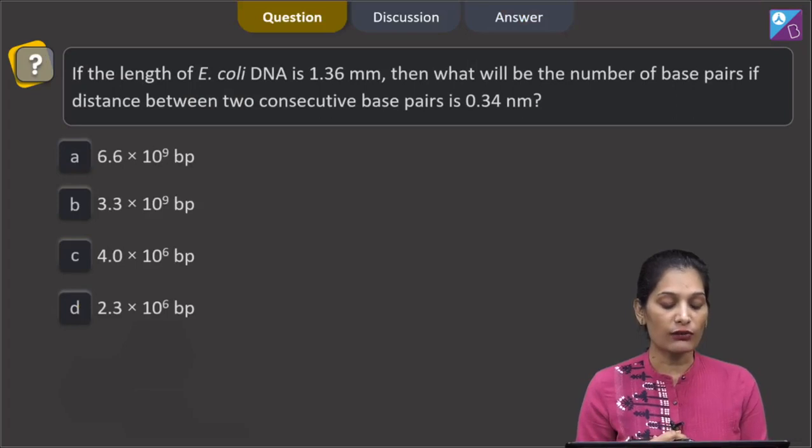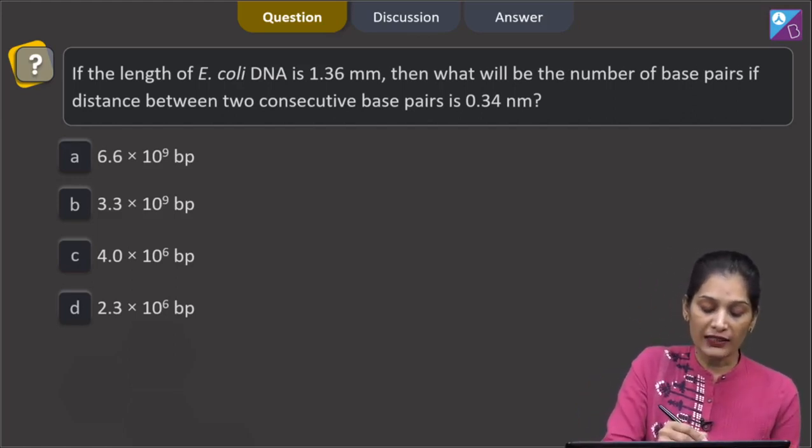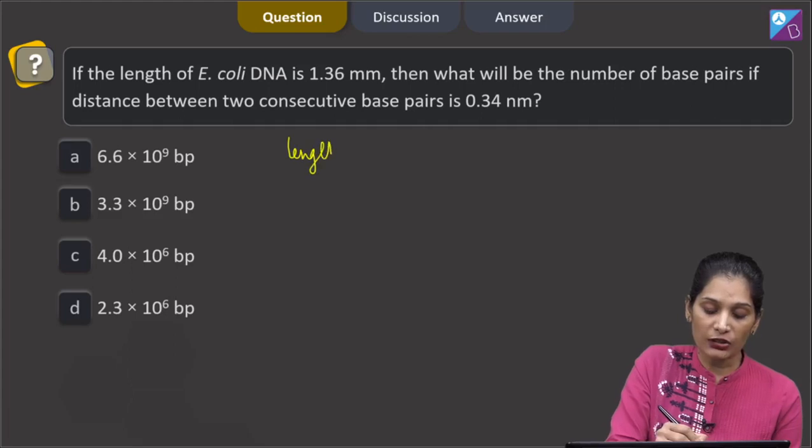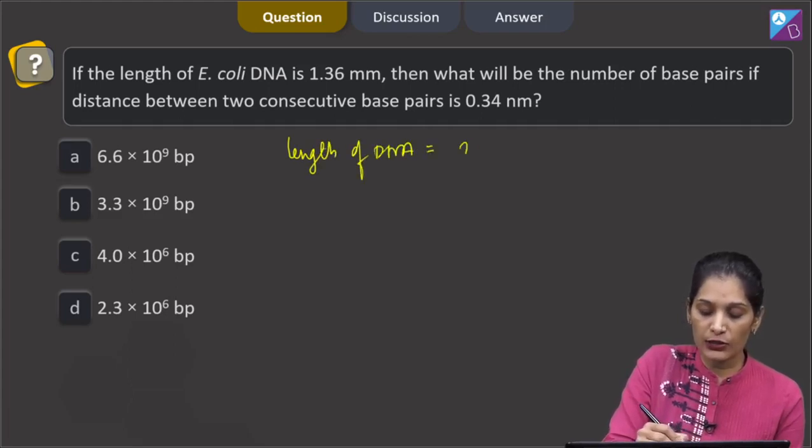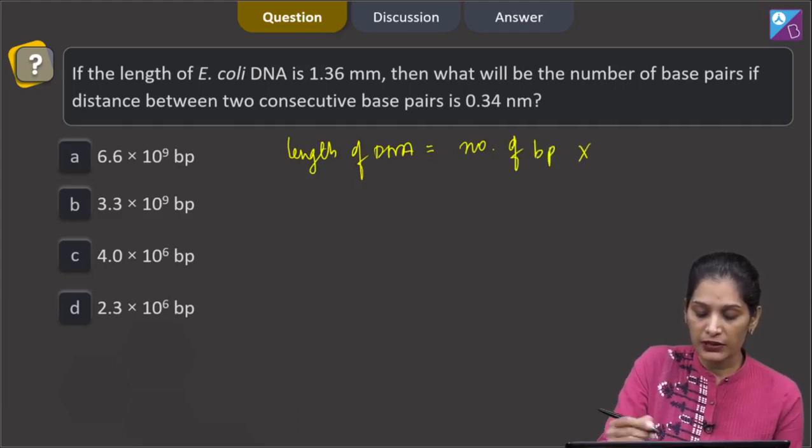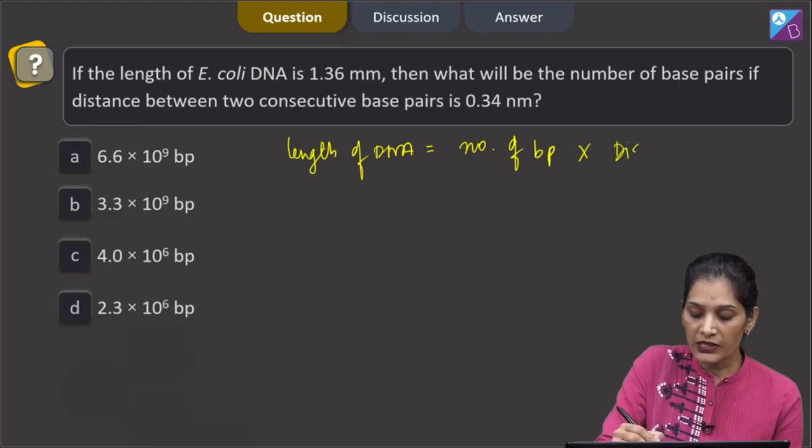This question says if the length of E. coli DNA is 1.36 mm, then what will be the number of base pairs if distance between two consecutive base pairs is 0.34 nanometer. We can calculate this by applying the formula that length of DNA is equal to number of base pairs into distance between